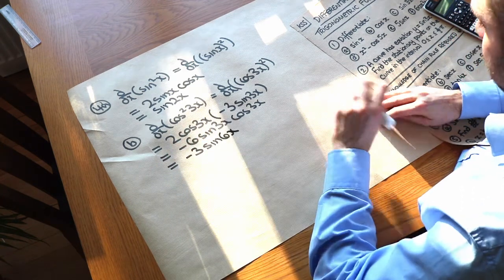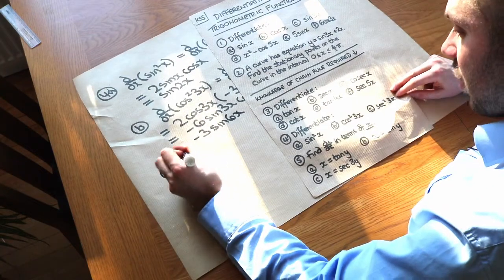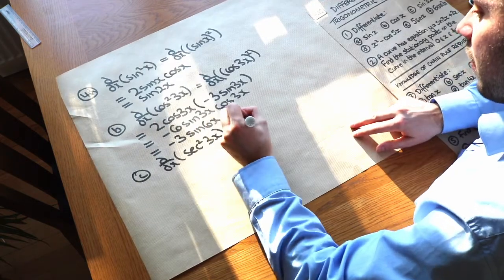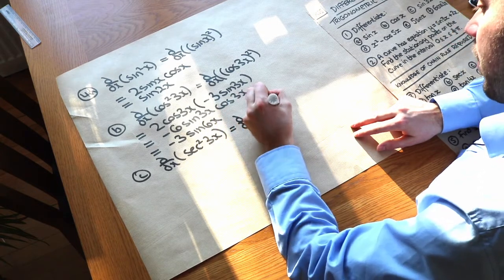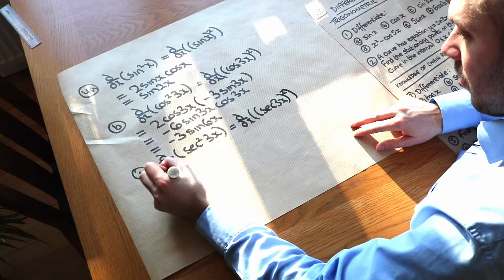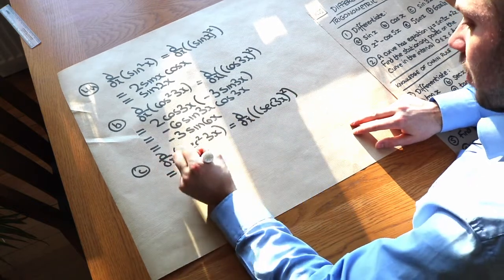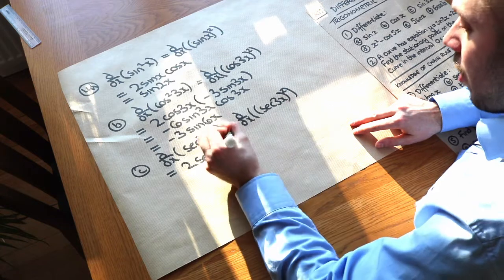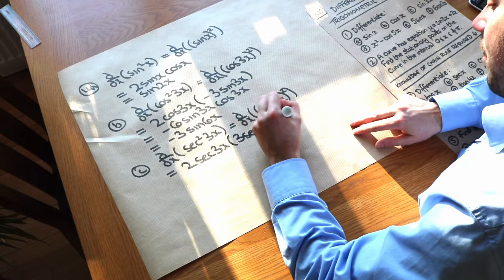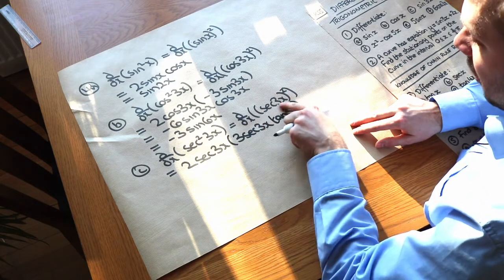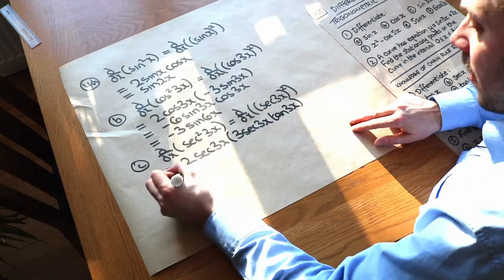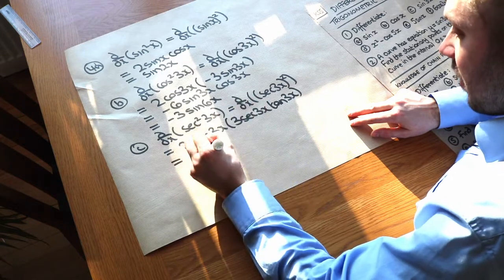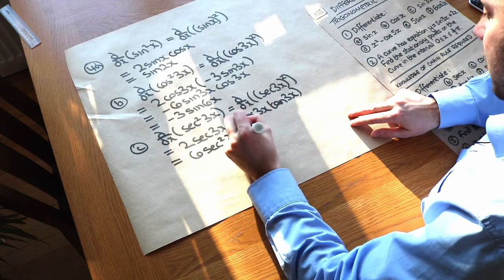For sec²(3x), write it as (sec 3x)². Blah² differentiates to 2 blah, and the inner function sec 3x differentiates to 3 sec 3x tan 3x — we're applying the chain rule twice. Simplifying: 2 times 3 is 6, and sec 3x times sec 3x is sec²(3x), giving 6 sec²(3x) tan(3x).